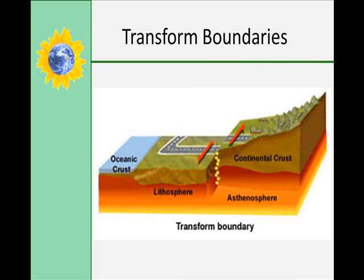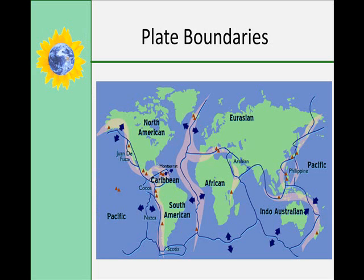The third type of boundary are transform boundaries, along which plates slide past each other. The San Andreas Fault, adjacent to which the U.S. city of San Francisco is built, is an example of a transform boundary between the Pacific Plate and the North American Plate. This map summarizes all of the known plate boundaries on Earth, showing whether they are divergent, convergent, or transform boundaries.